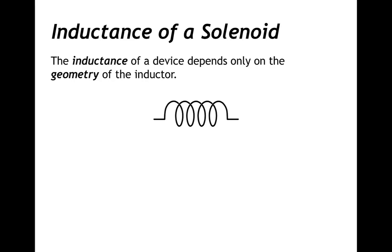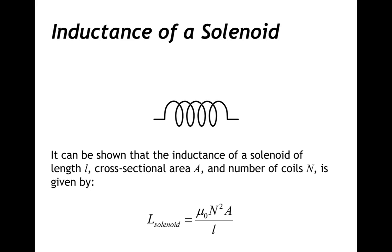The inductance of a device depends only on the geometry of the inductor. We've shown previously that the inductance of a solenoid of length L, cross-sectional area A, and number of coils N is given by the following expression: the product of the permeability of free space, the square of the number of loops, and the area of each loop, divided by the length of the solenoid.